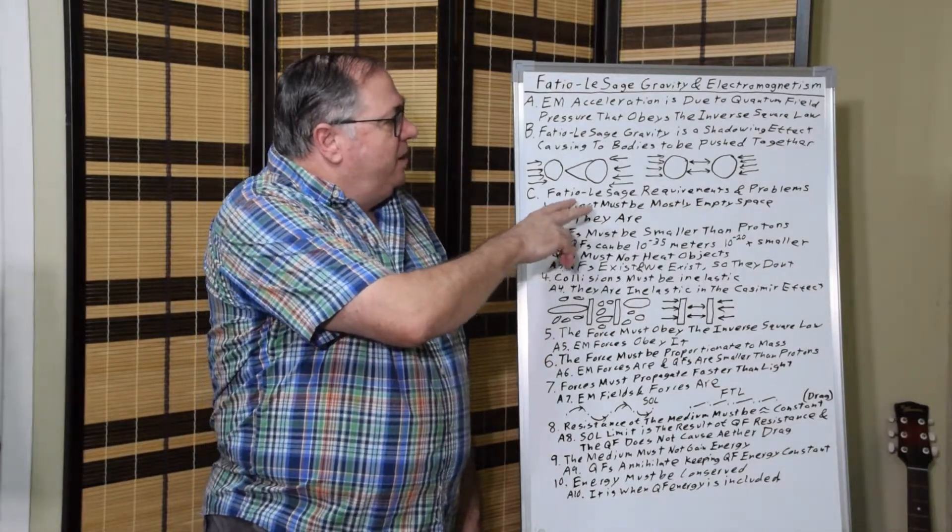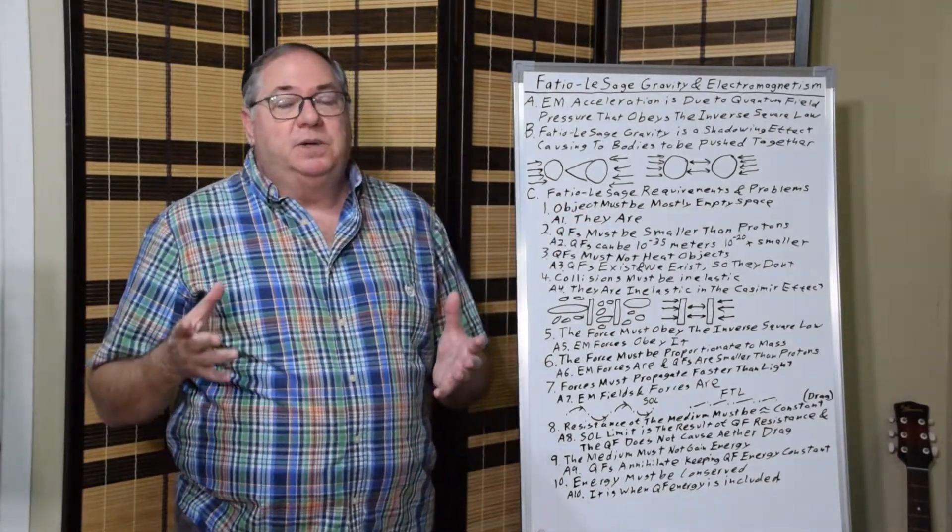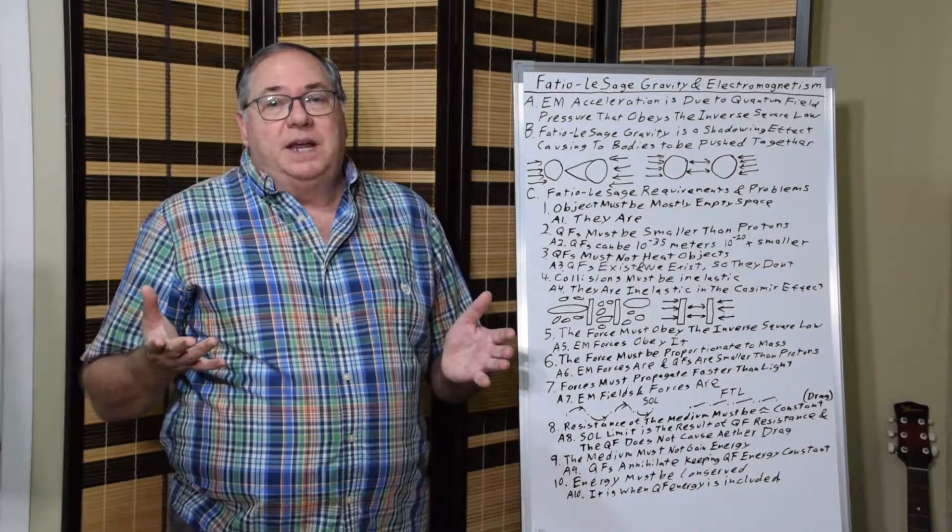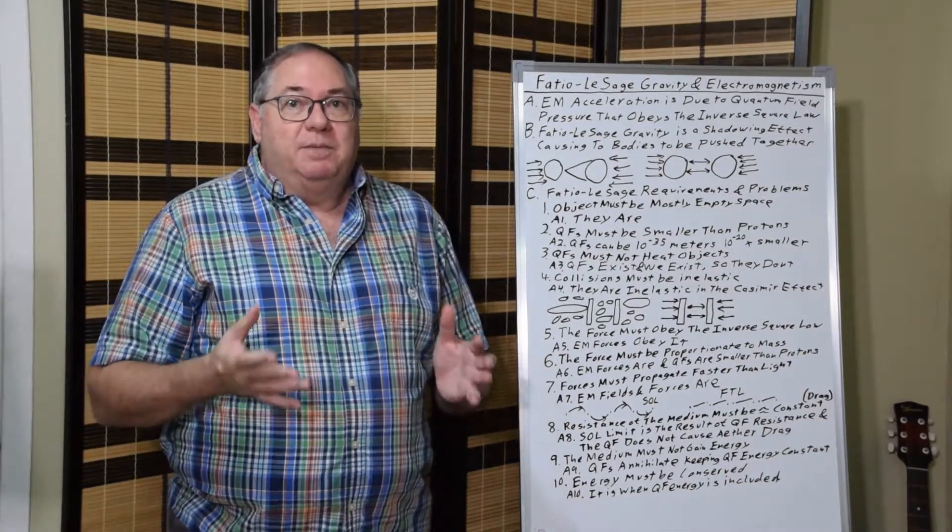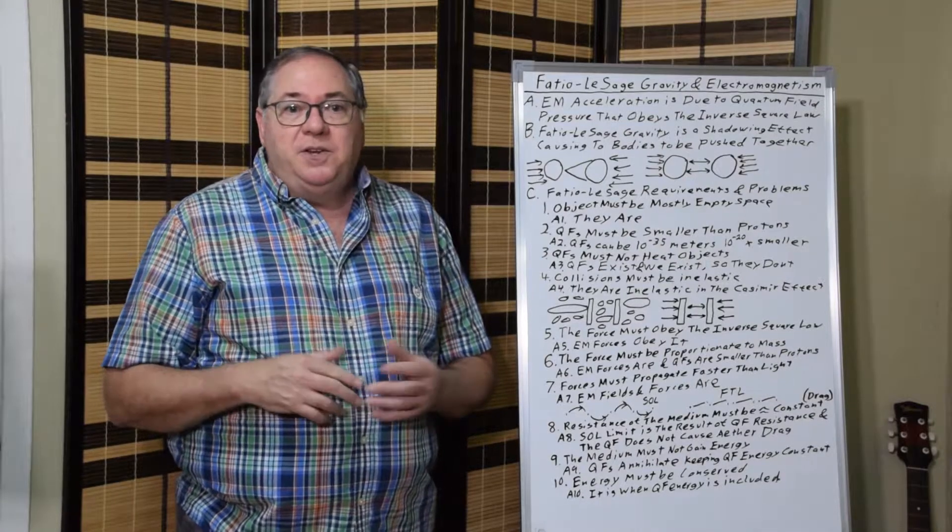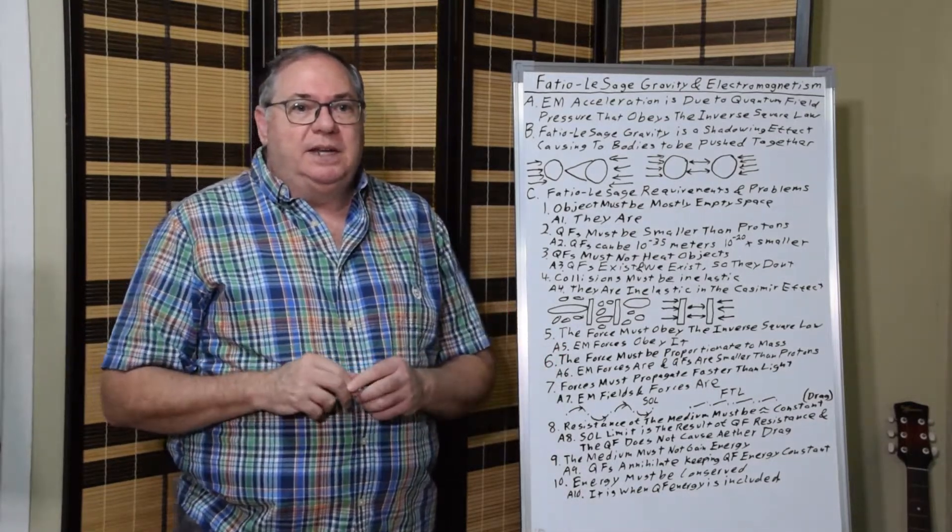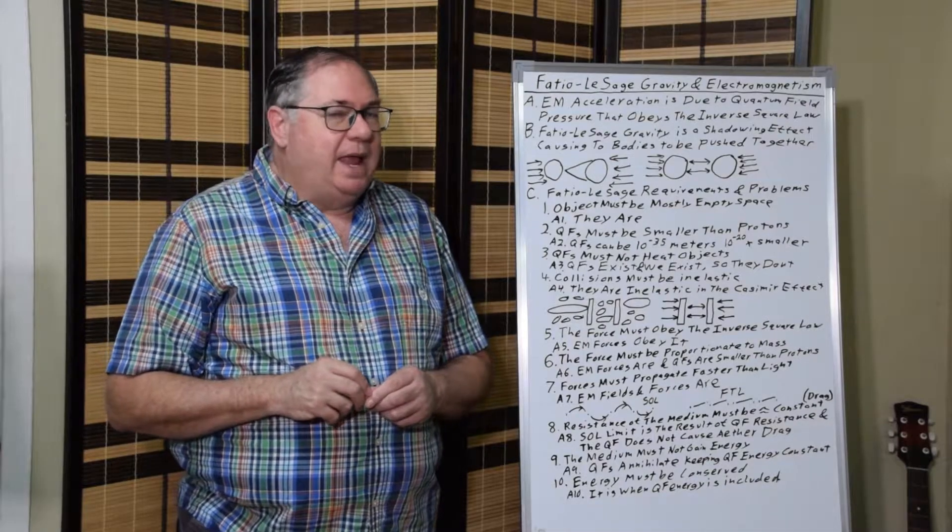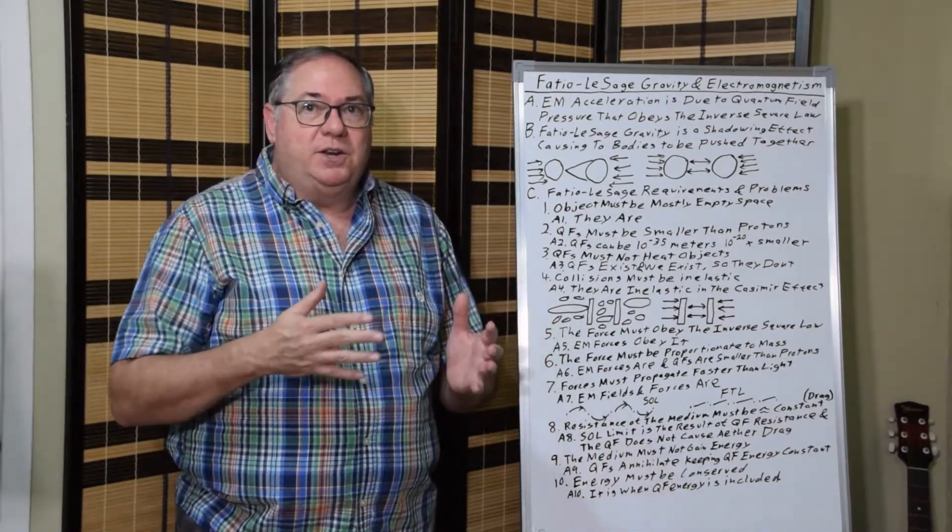So one of the first problems identified by Fatio was that atoms have to be mostly empty space. Although he didn't know about atoms, the matter has to be mostly empty space. And he's right about that. He was one of the first to realize that, and that means that particles can transmit through there.